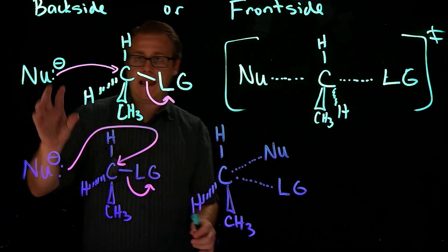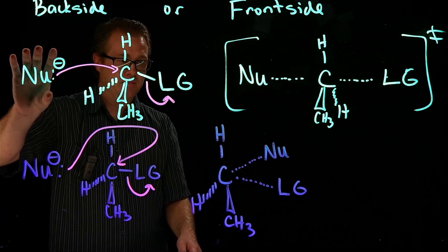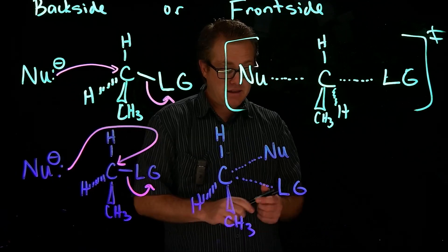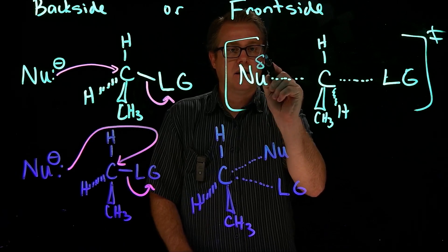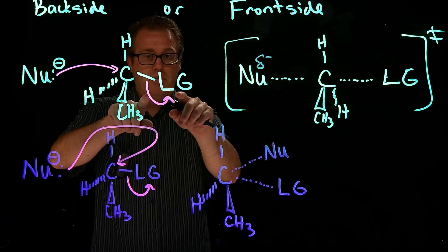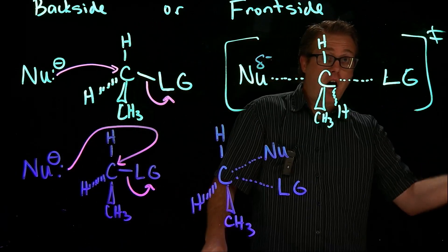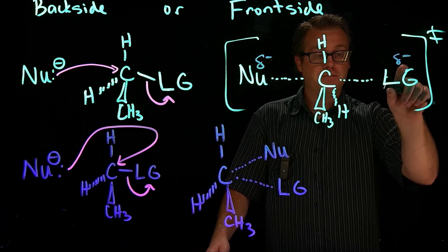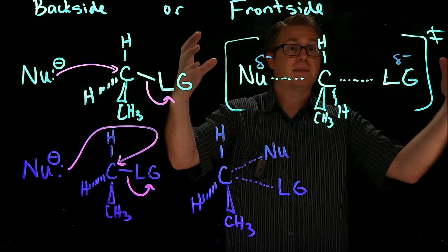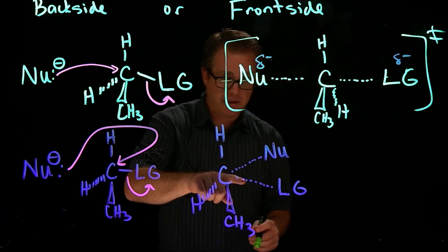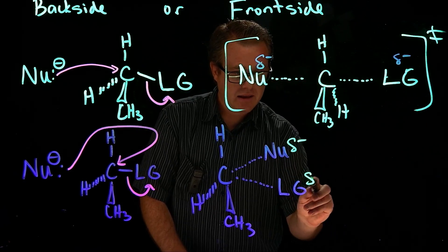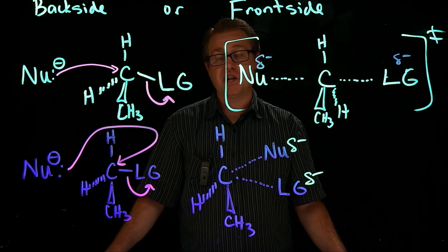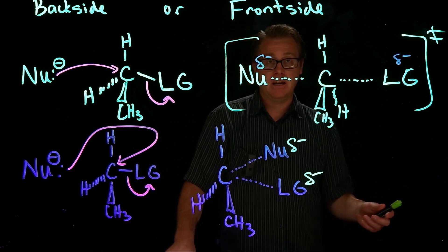We can rationalize why front side attack doesn't happen: the nucleophile is negatively charged — partially negative at the transition state — and the leaving group also has a partial negative as it departs. In backside attack, these two partial negatives are on opposite sides of the molecule. But in front side attack, these partial negatives would be right next to each other, which is very repulsive. Like charges do not associate well, so that approach is high in energy and energetically not favorable.